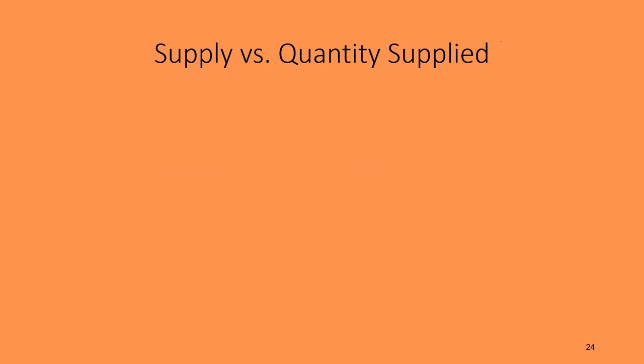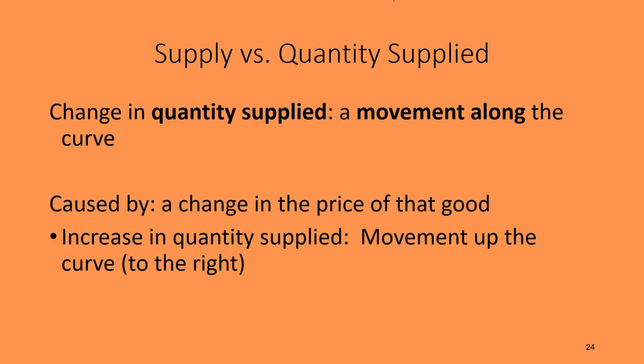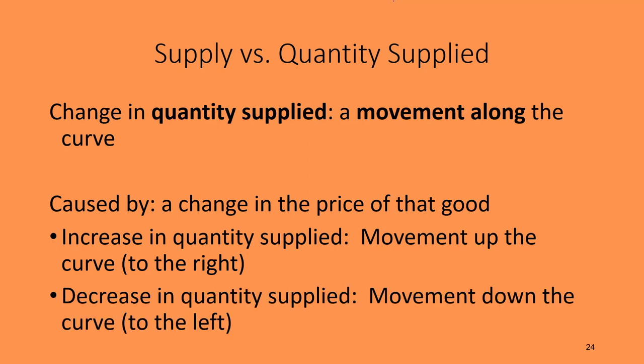Now let's discuss the difference between a change in supply versus a change in quantity supplied. A change in quantity supplied is a movement along the curve — going from one point on the supply curve to a different point on that same curve. It's caused by one thing only: a change in the current price of that good. An increase in quantity supplied is a movement up the curve to the right; a decrease is a movement down the curve to the left.